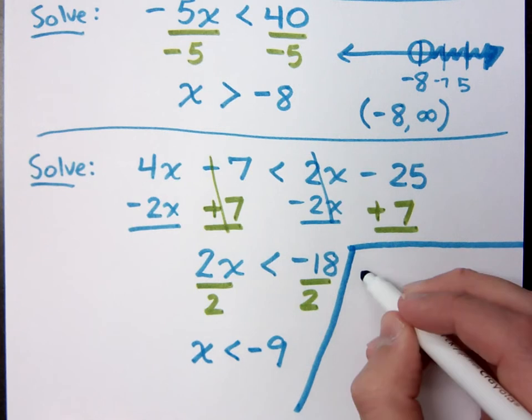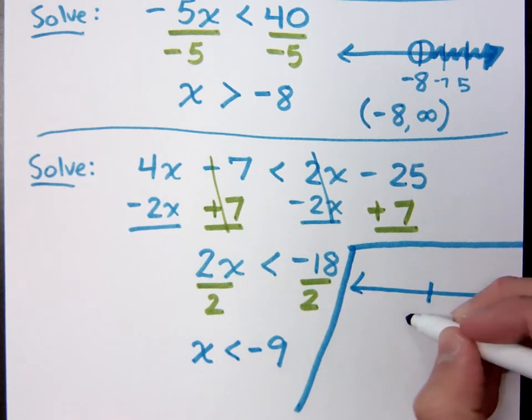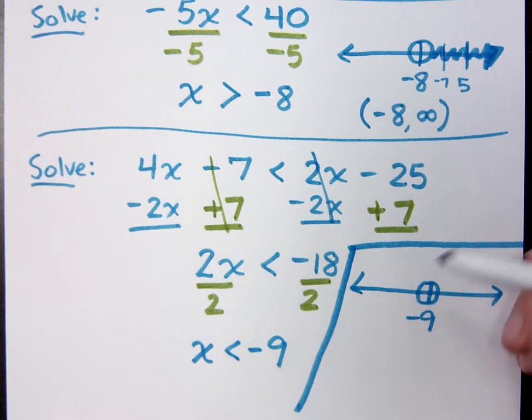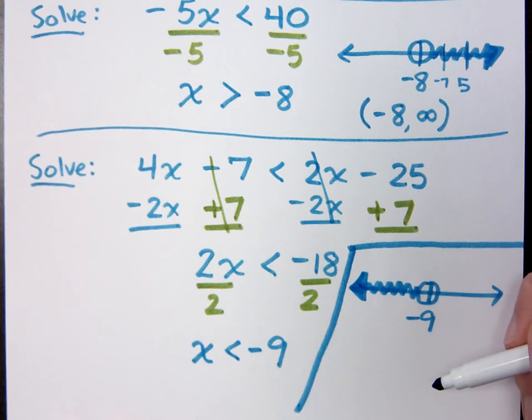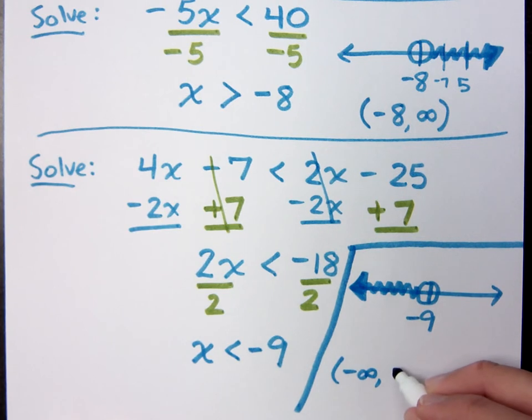So what does my graph look like? Negative 9, open circle. Which way do I shade? To the left. Your solutions are less than, so they're going out to the left. How do you go from that to interval notation? Negative 9. Parentheses. Negative infinity. Right. Negative 9. Close parentheses. Exactly.